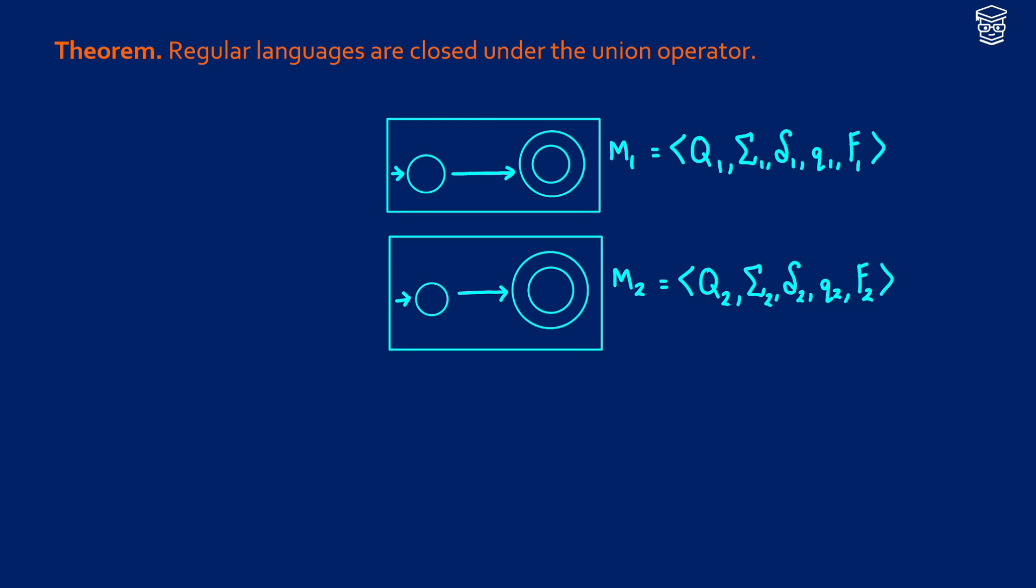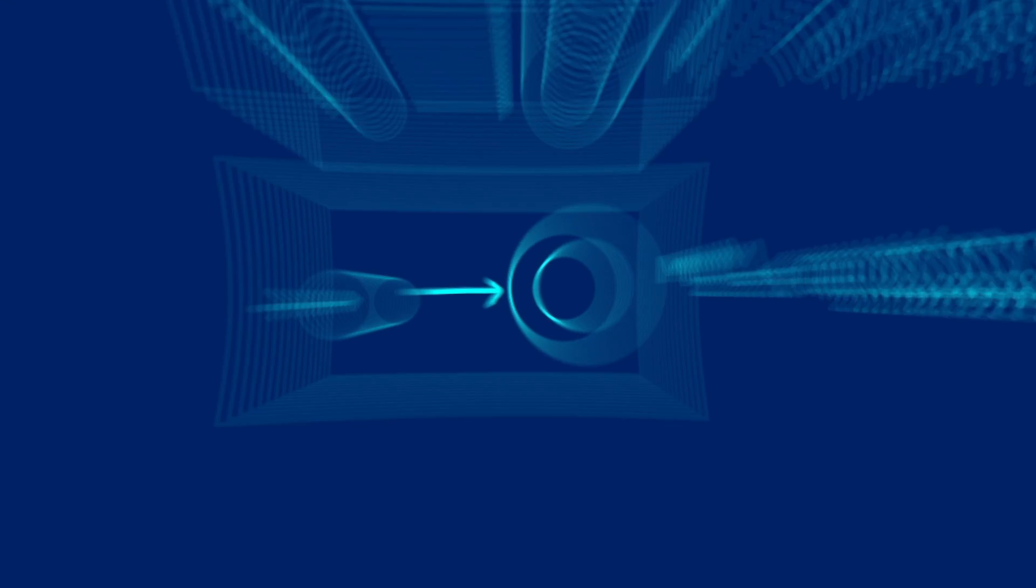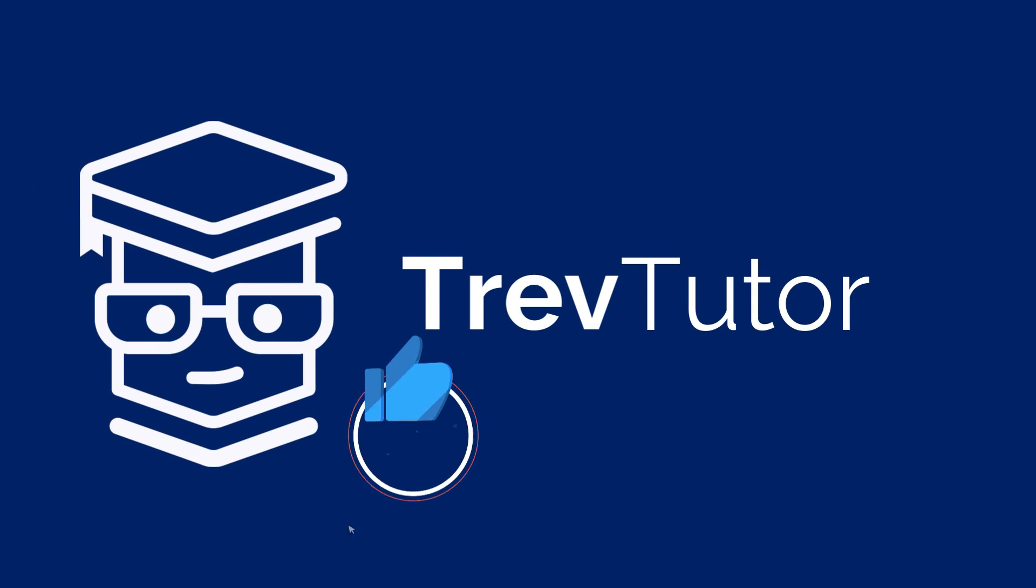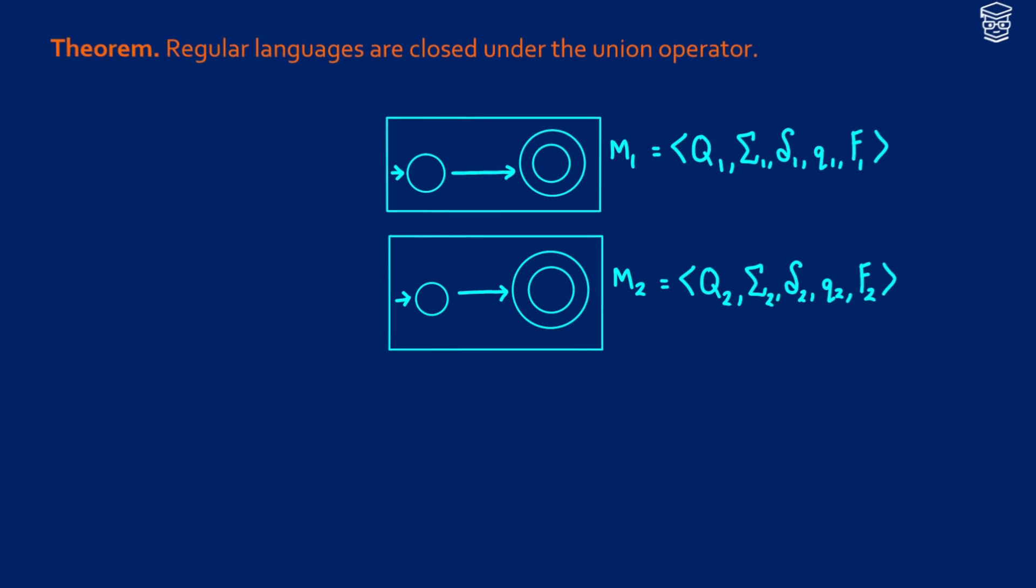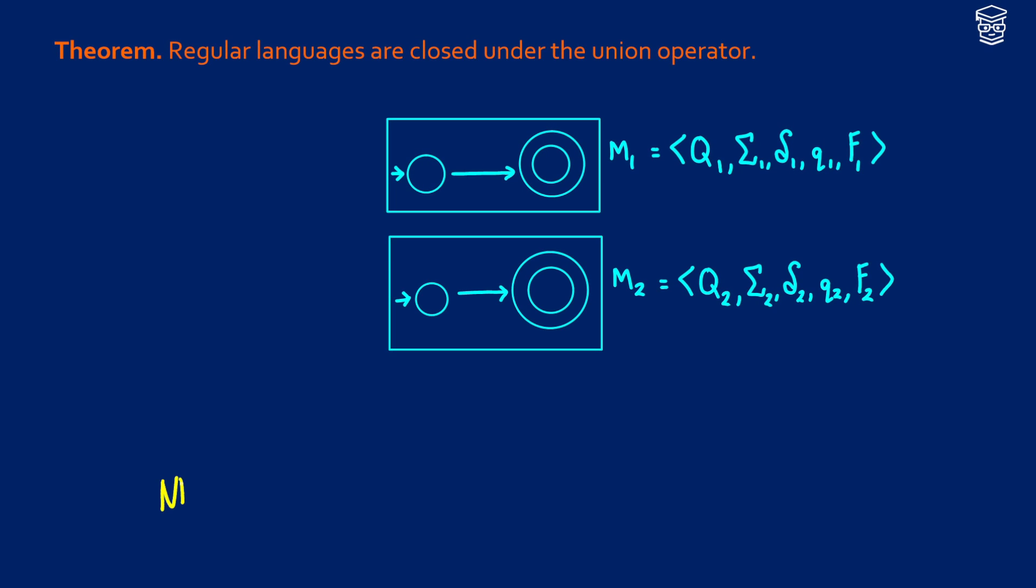In this video, we're going to prove the theorem that regular languages are closed under the union operator. In the last video, we showed that we can take an NFA and push it to a DFA, so they're equivalent, and we know that all DFAs are equivalent with regular languages. So if we can construct an NFA that accepts the union operator, then we'll know that it's regular for any of the NFAs that we create.